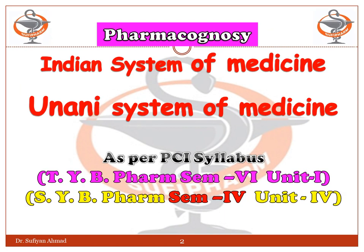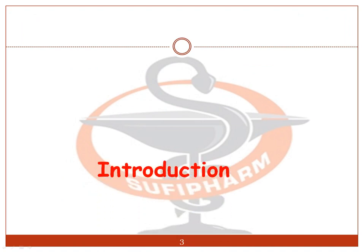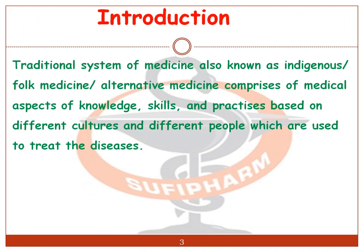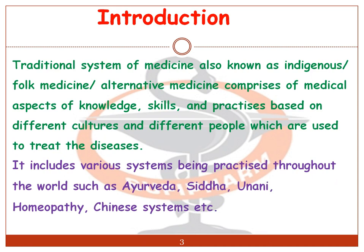The basic introduction of the traditional system of medicine is that it is also known as indigenous folk medicine or alternative medicine. It comprises medical aspects of knowledge, skill, and practices based on different cultures and peoples, which are used to treat disease. It includes various systems practiced throughout the world such as Ayurveda, Siddha, Yunani, Homeopathy, Chinese System, Amchi, etc.